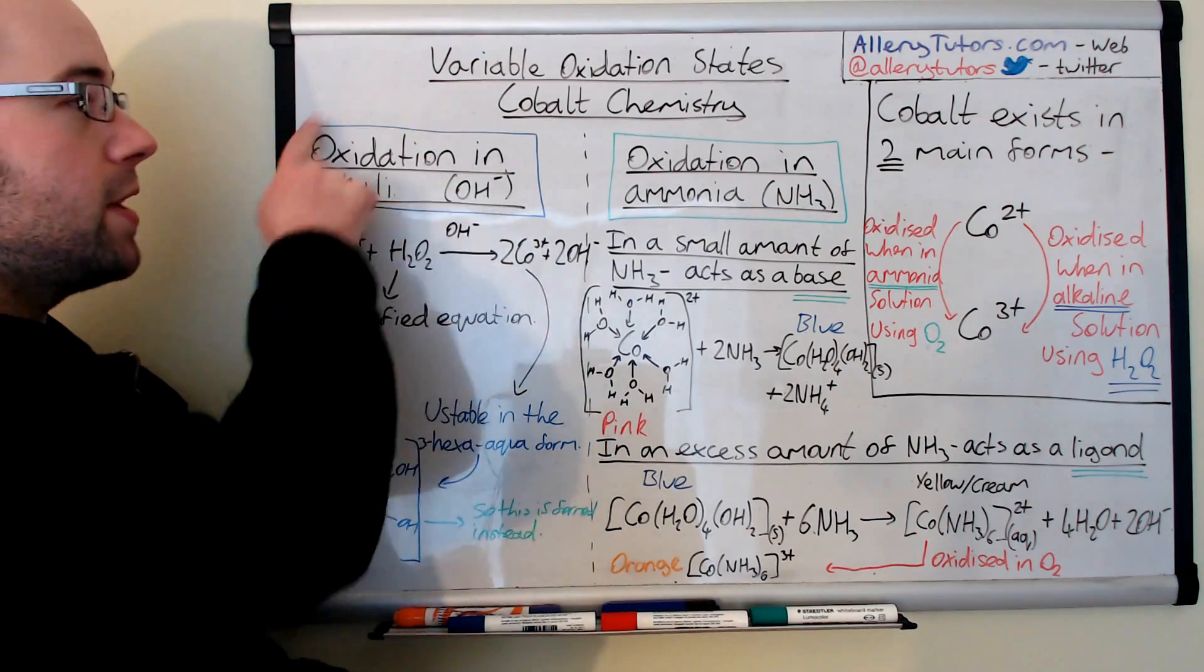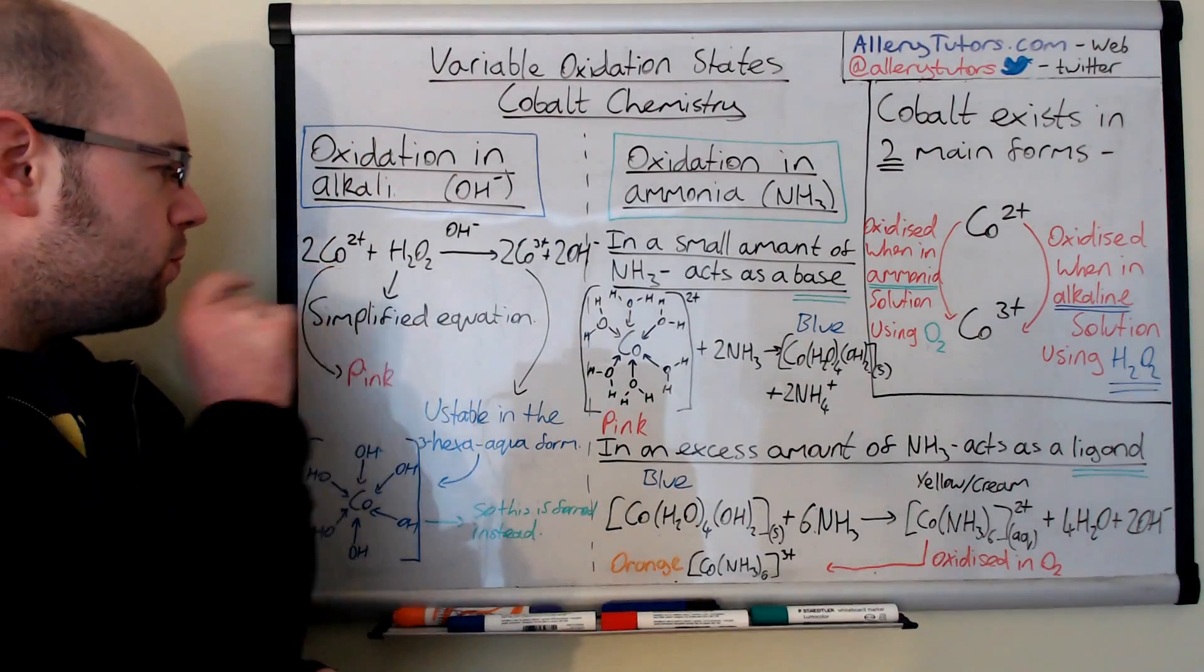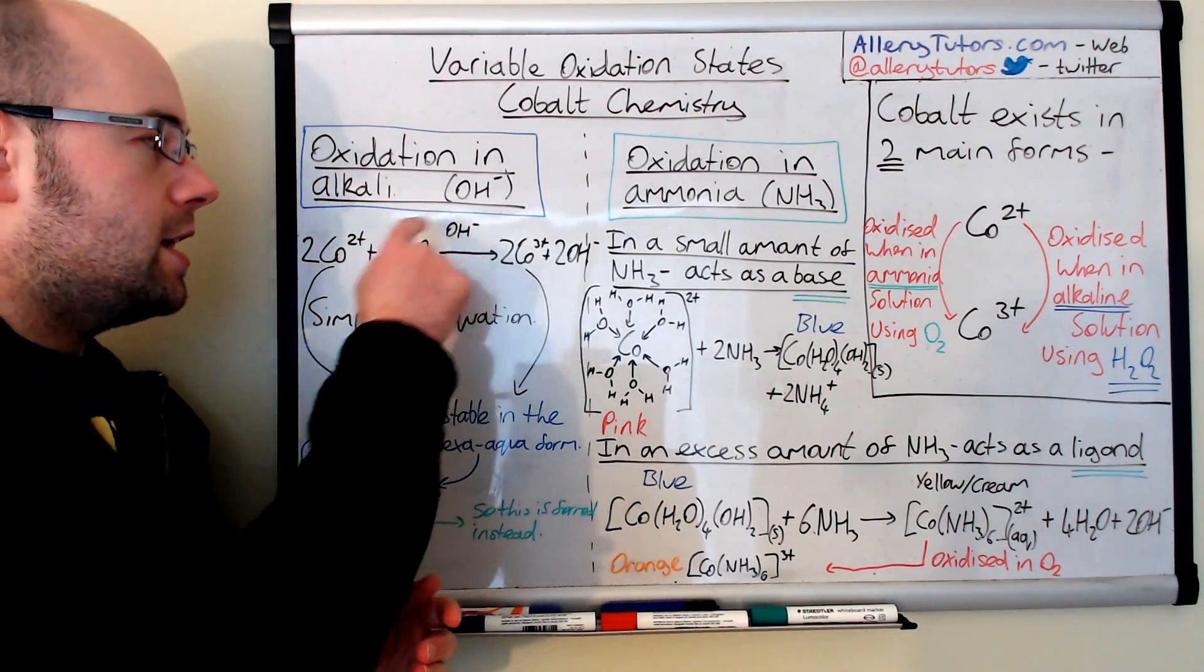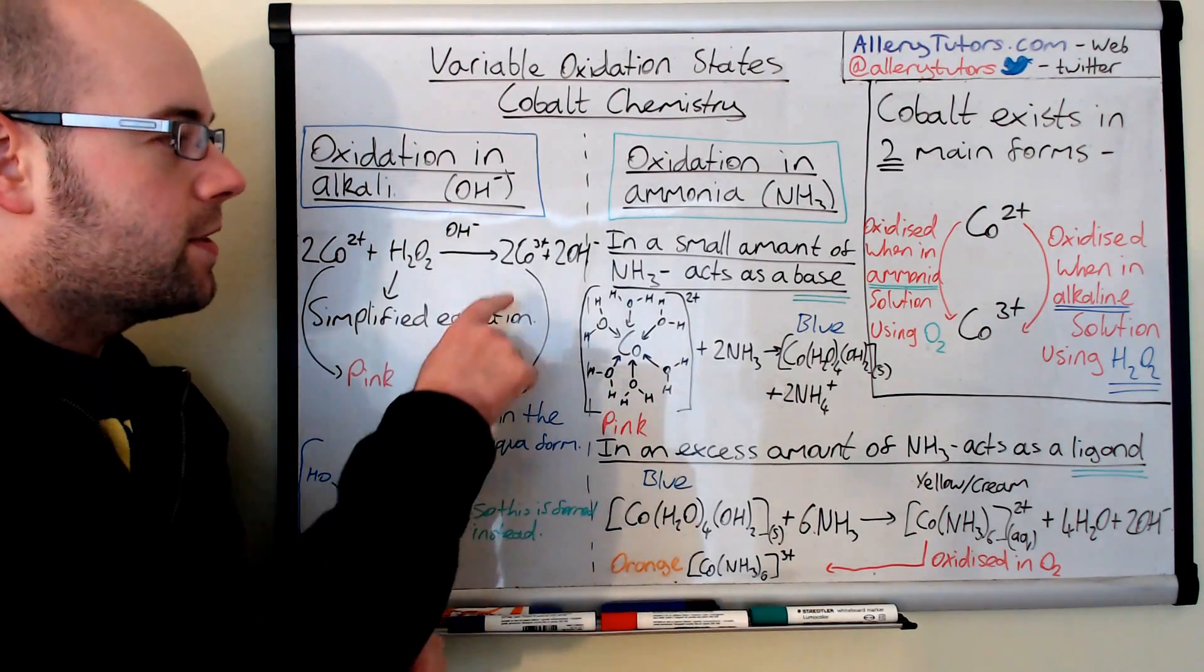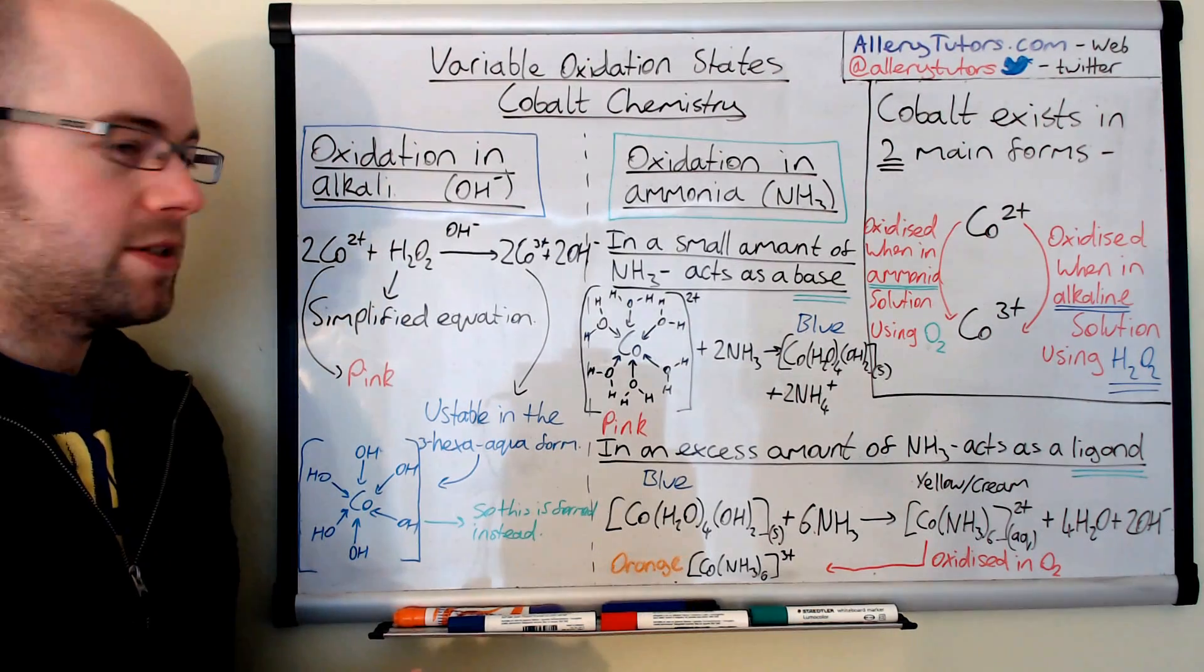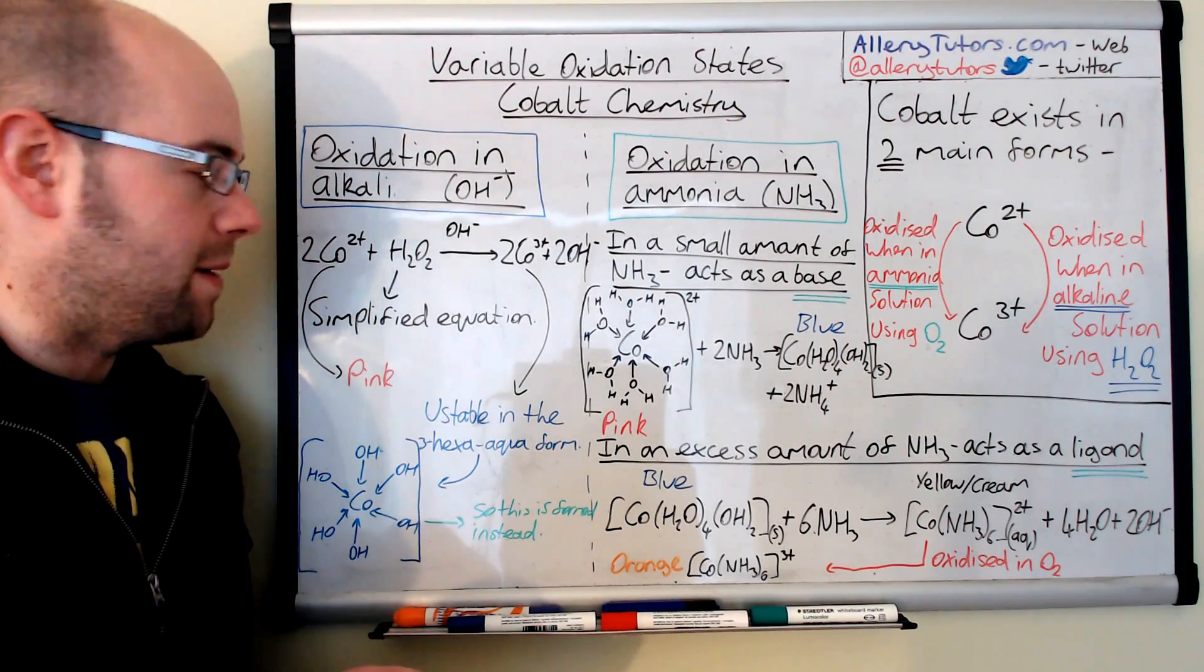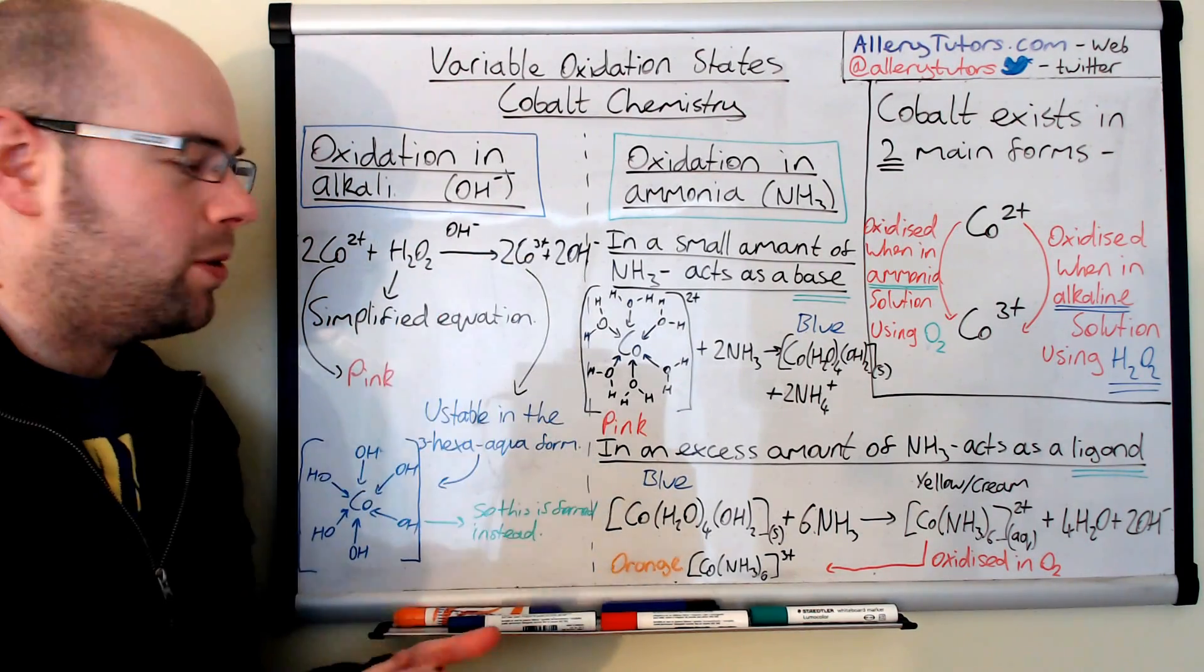So we're going to start here. I've color coded this in blue so we can see where it matches. So if we take our cobalt 2 plus complex and react it with hydrogen peroxide in an alkaline solution, so in the presence of sodium hydroxide, then we form cobalt 3 plus and two lots of OH minus. Now you can see that cobalt 2 plus is actually a pink compound when it's dissolved in solution. It's quite a bright pink color and when we add it to peroxide, we form cobalt 3 plus.